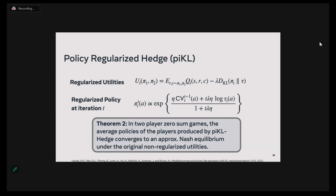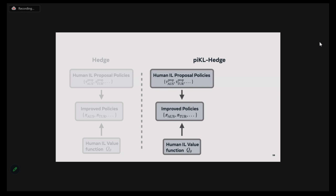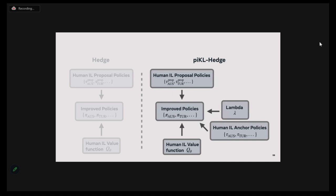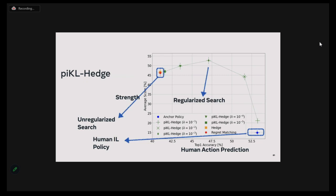Recall that Hedge takes in a human imitation learned proposal policy and value function learned from the human play dataset to find strong policies. With PICL Hedge, we use the same proposal policies and value function, but also take a lambda parameter and human imitation learned anchor policies. Generally, the anchor policies and proposal policies are kept the same. With lambda equal to 0.1, you obtain a policy that gets much higher performance relative to imitation learning, while also maintaining the human action prediction score.